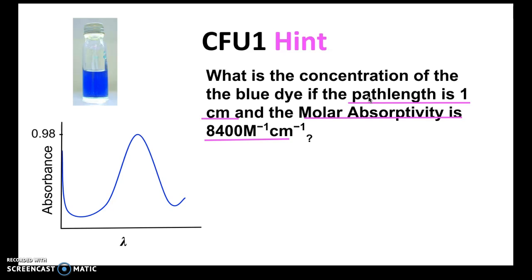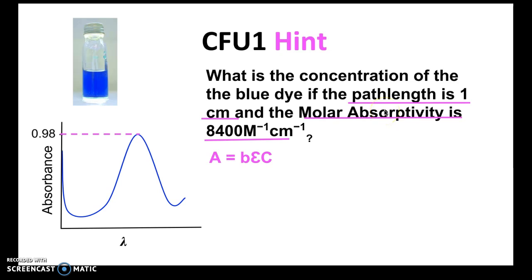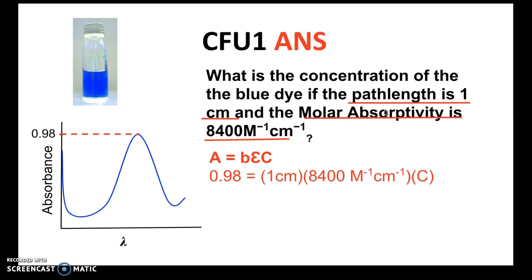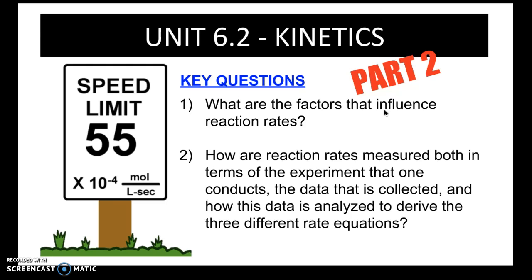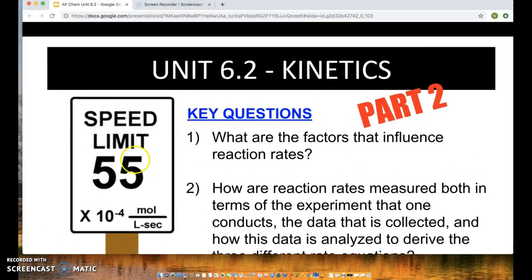Once you have the absorbance from the highest peak, plug it into the Beer-Lambert equation along with path length and molar absorptivity, then solve for concentration. The concentration works out to be 1.2 × 10⁻⁴ molar. That's it for part one — we're moving on to part two now. Hope you found this video helpful. Have a quality day!